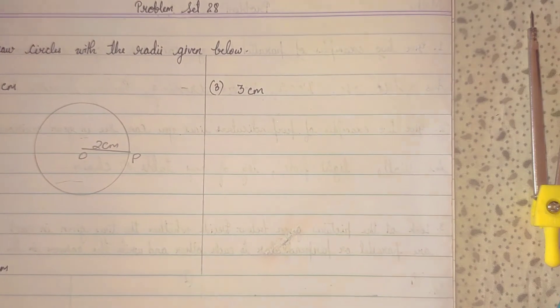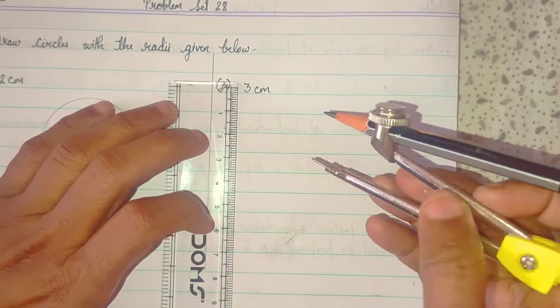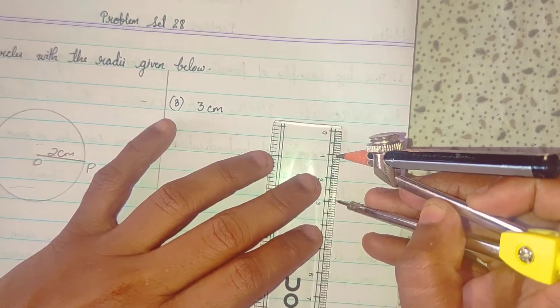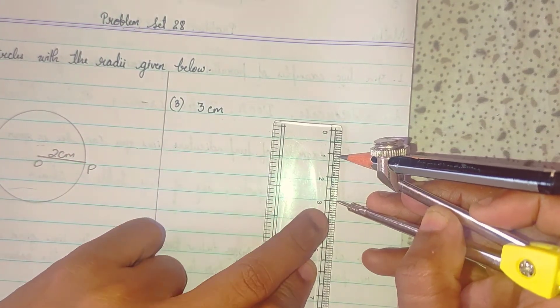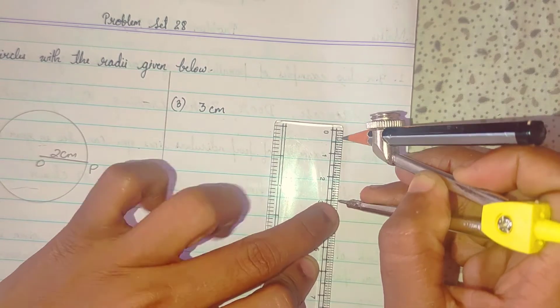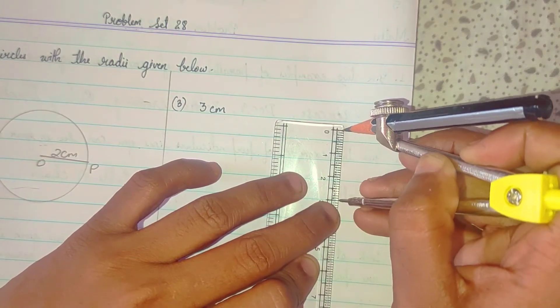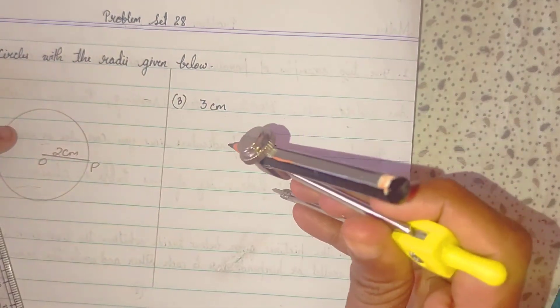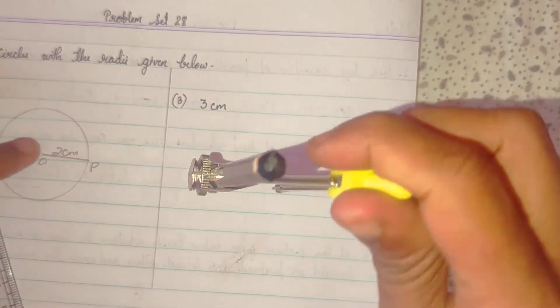Now, 3 centimeter. So, fix any line as 3. And then, take your 3 here. And then, measure up to 0. Then, decide one center.